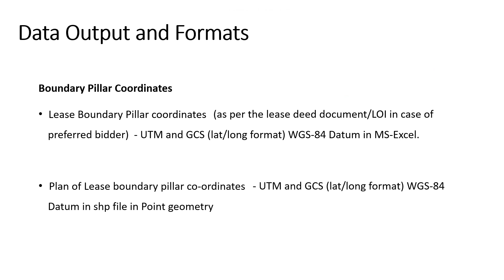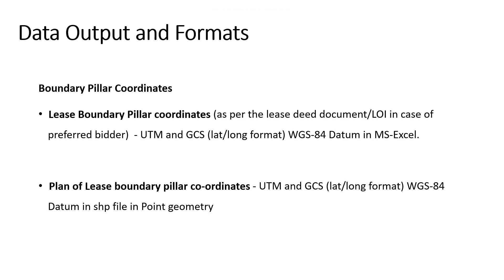The final update in data outputs is on the boundary pillar coordinates. In the previous SOP, they needed to be submitted in shapefile and Excel format in geographic and projected coordinate systems. In the new updated SOP, the boundary pillar coordinates must be submitted in Excel format in GCS and UTM. Additionally, a plan of the lease boundary pillar coordinates must be submitted in UTM and GCS in WGS84 datum in shapefile format, with two separate shapefiles for GCS and UTM.